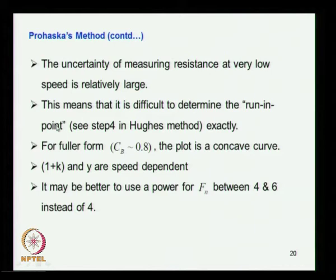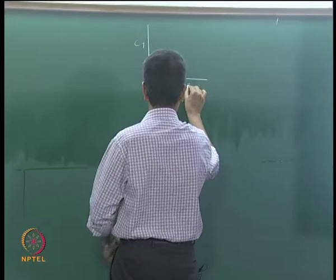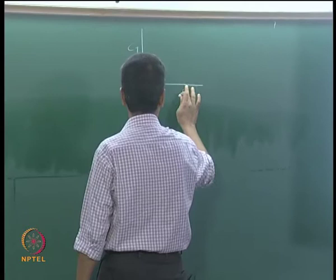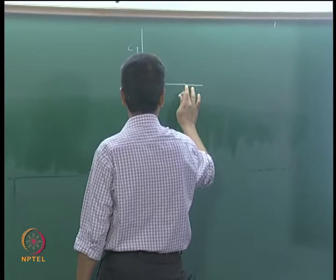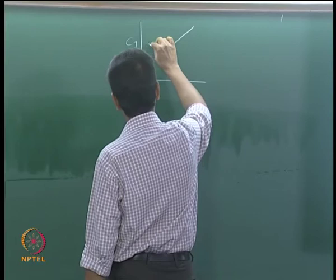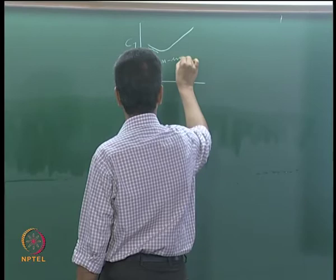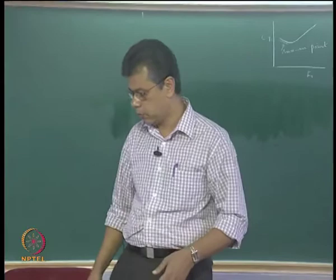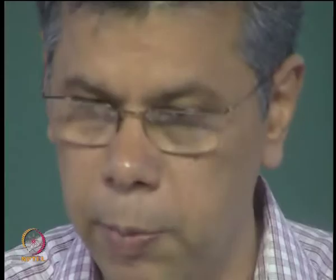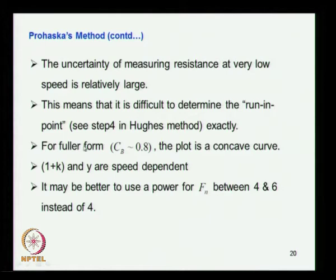If you draw CT against Froude number, you see the resistance goes like this and then increases — so this is the run-in point. We have already discussed this when we discussed the Hughes method for the prediction of resistance from model test. It is difficult to determine the run-in point because that is the region with this uncertainty, since we have to operate the model at very low Froude number.